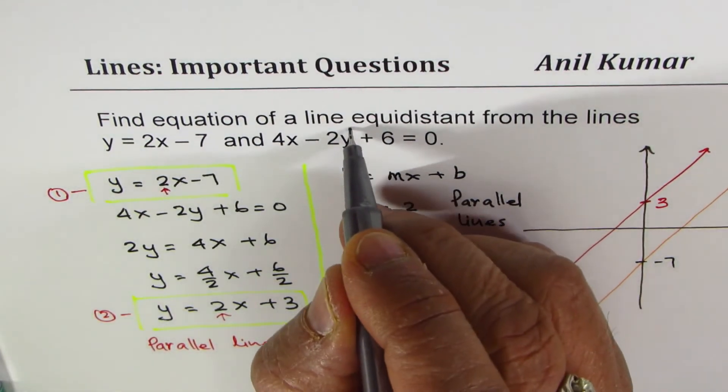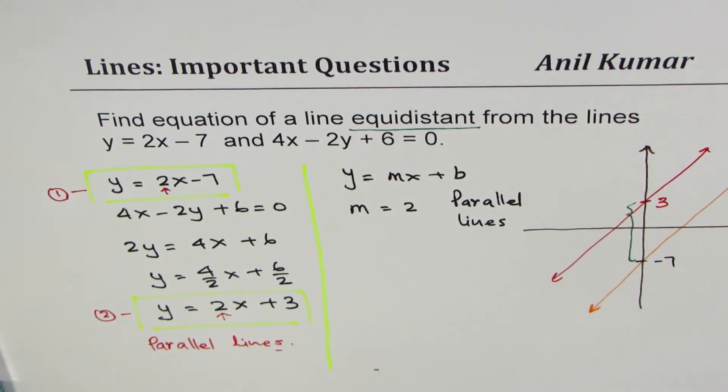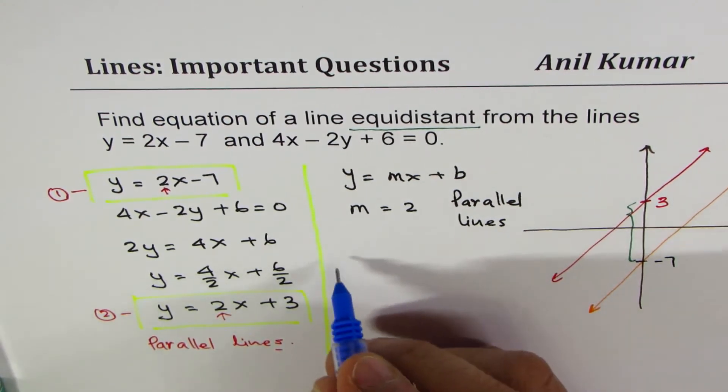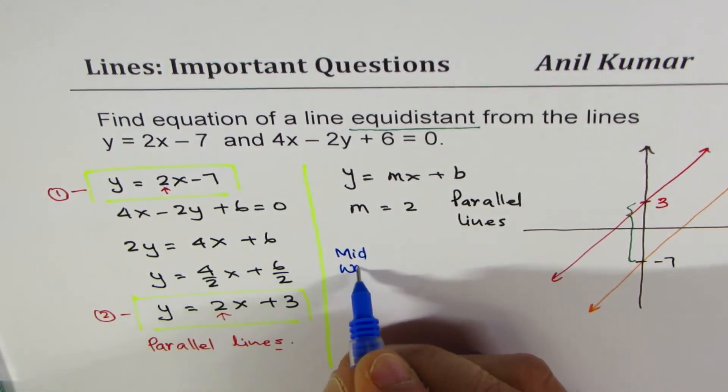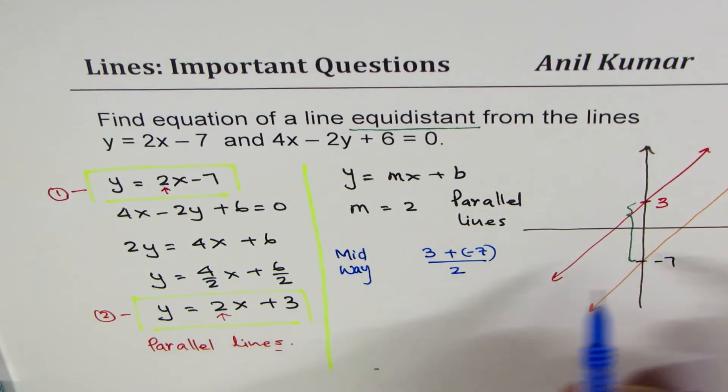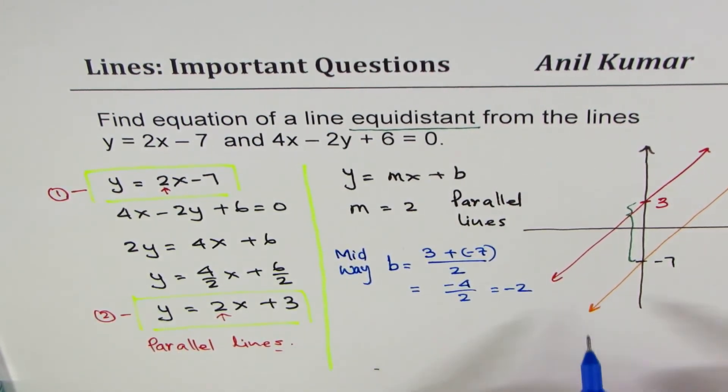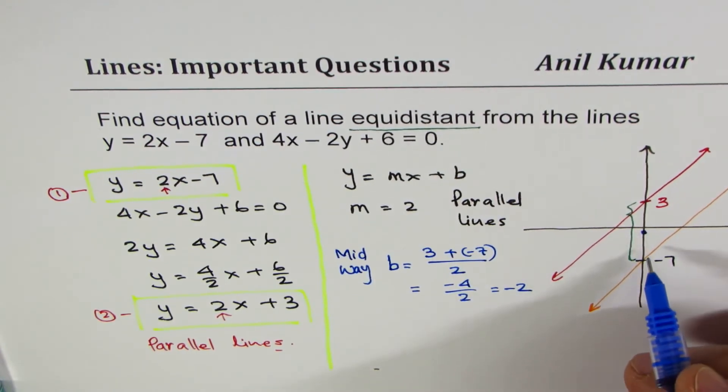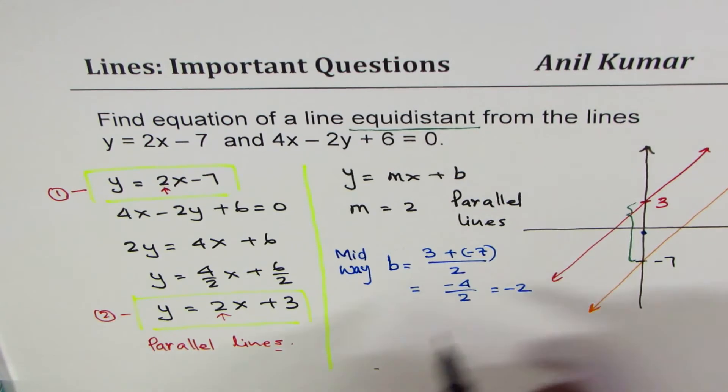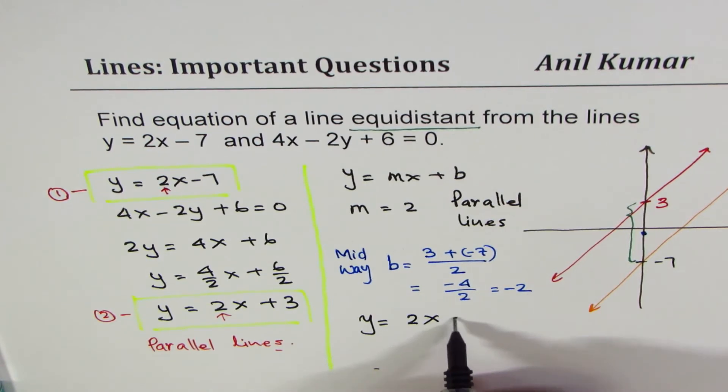The only thing we need to figure out is the y-intercept. Since we want it equidistant, it means it should be midway between these two. So what is midway between them? Add and divide by 2. So we want the y value, midway between them. So midway is (3 + (-7)) / 2. So that becomes my y-intercept b for this line. So that gives us -4/2 or -2. So the value of b is -2. And therefore, I could now write down my equation as y = 2x - 2.